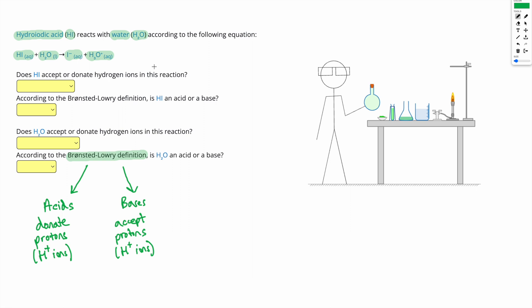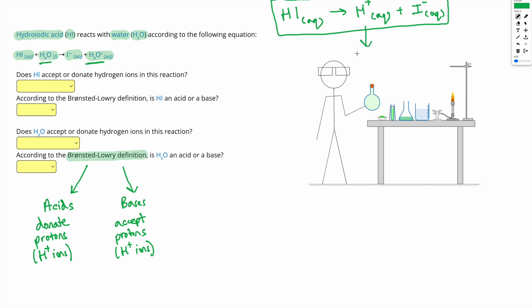In the previous skill, when we were talking about the Arrhenius definition of acids and bases, we had the same equation shown for hydroiodic acid dissociating, except we showed it dissociating into H+ and I minus. This time we can see it's reacting with H2O, and instead of forming an H+, it's forming an H3O plus.